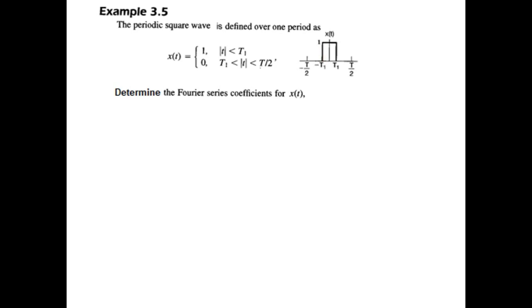You can see the value is 1 for t minus and t plus, with the range being capital T1 and capital T minus 1. At all other places, from t1 to T/2 minus or T/2 plus, the value is 0, defining one